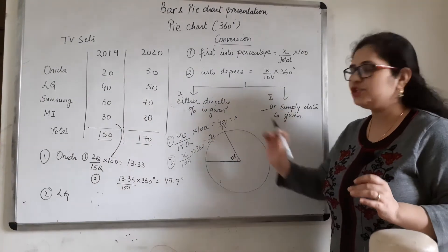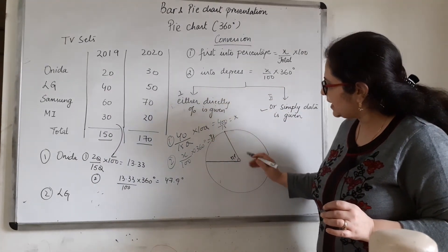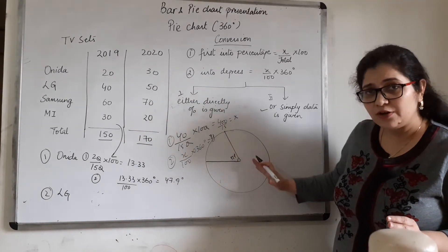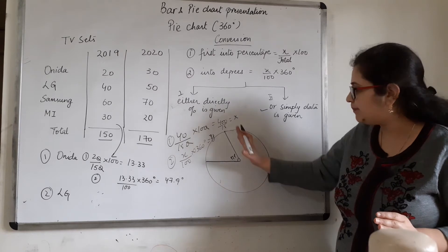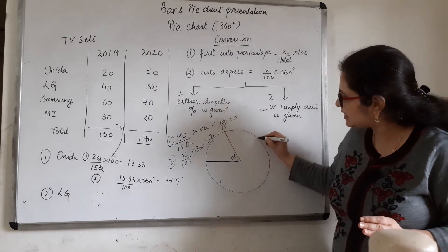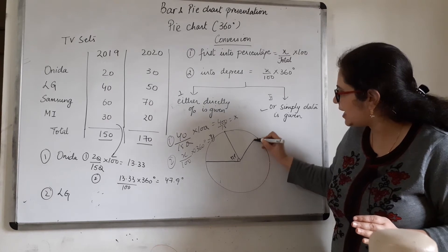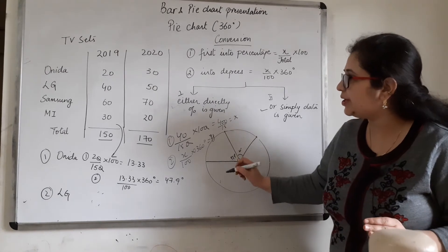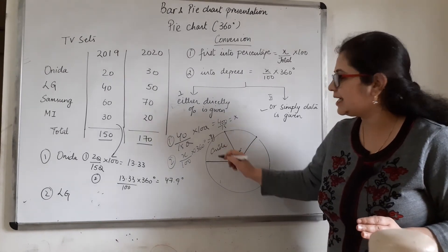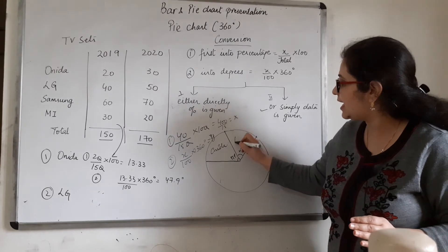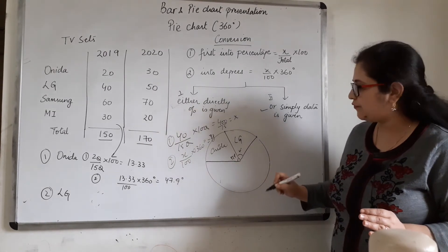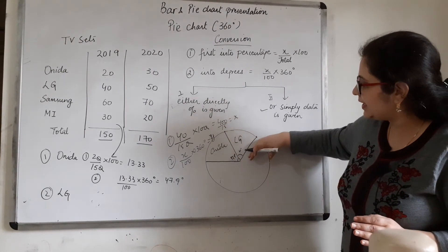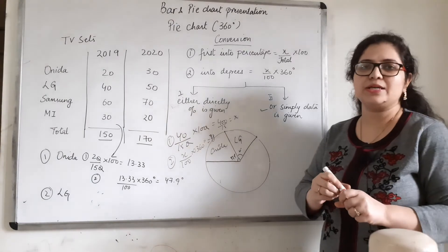Now think that the next value is 30 degrees. What will I do? I will put the protractor straight from the line of 47.9 degrees, and measure 30 degrees from there. Then plot it there — 30 degrees. What was 47.9 degrees? That was Onida. So write Onida. What is 30 degrees? That is LG. Write LG. And so on for each brand. So you keep placing the protractor, measuring each angle, and making the whole pie chart.